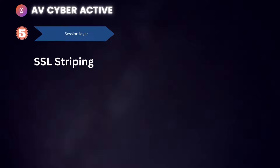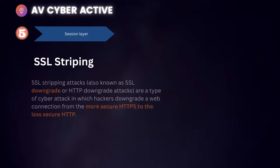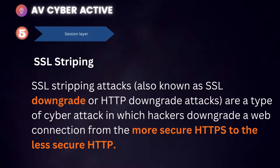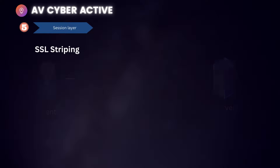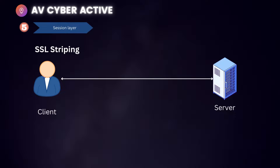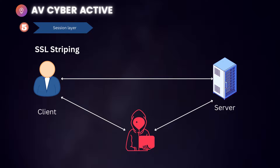The next session layer attack is SSL stripping, also known as SSL downgrade or HTTP downgrade attacks. These are a type of cyber attack in which hackers downgrade a web connection from the more secure HTTPS to the less secure HTTP. In this attack, the client tries to access a website and the recipient of the request is actually the attacker, who intervenes and acts as a default gateway for the client, forwarding the packet to the server.